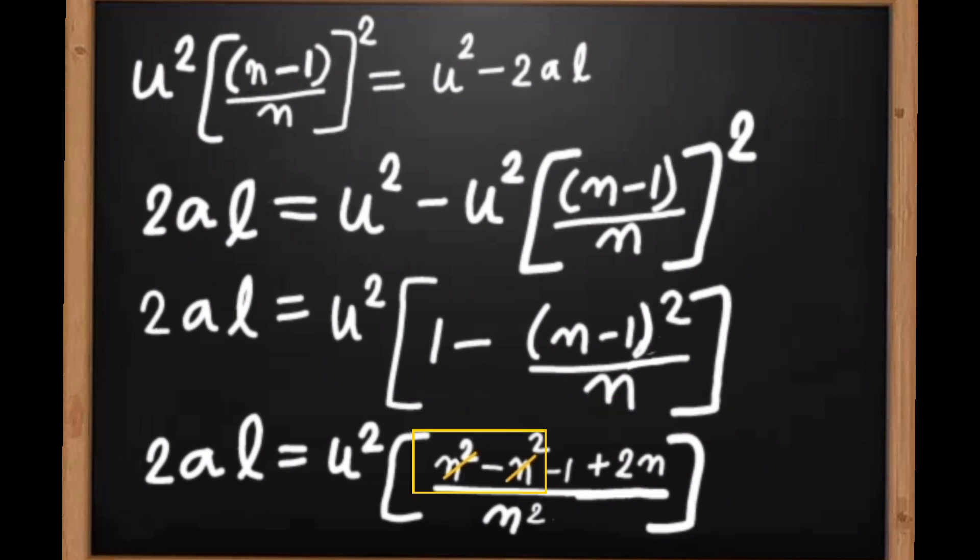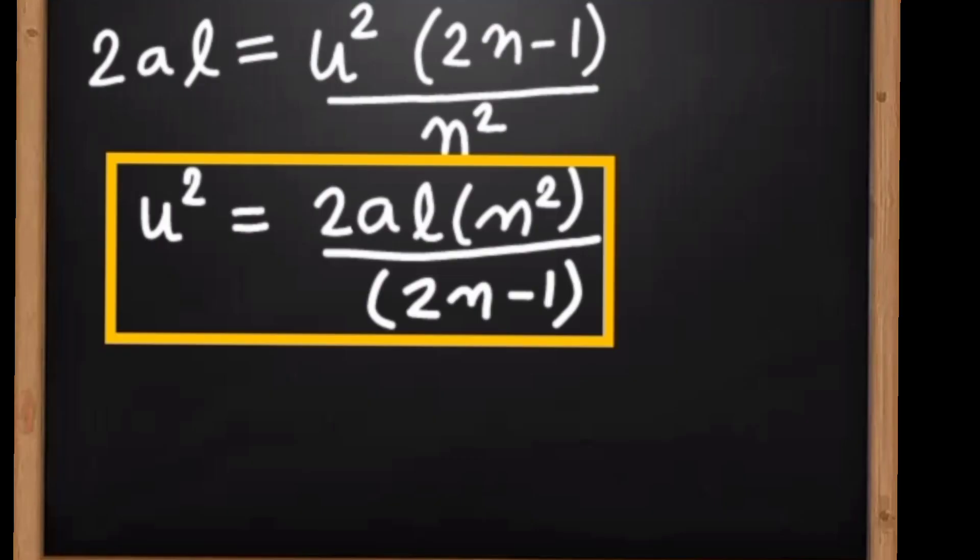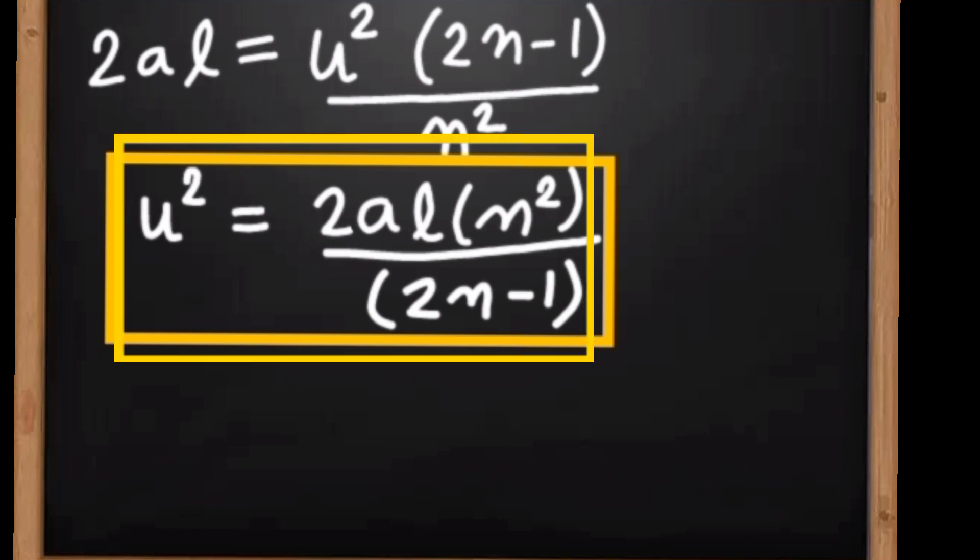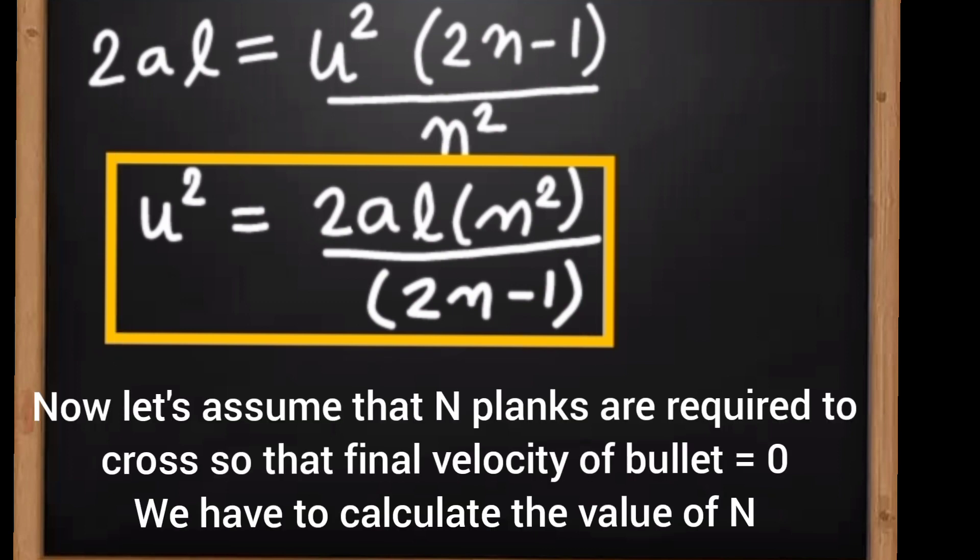As n² gets cancelled out, now we can write u² = 2al·n²/(2n-1).